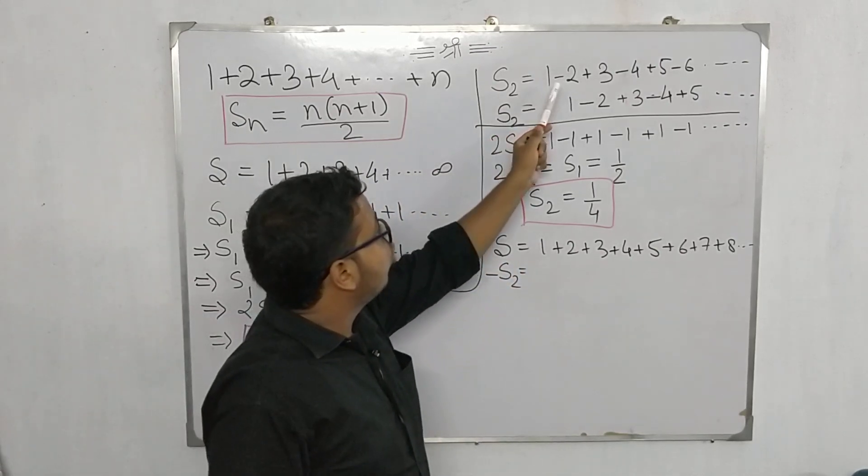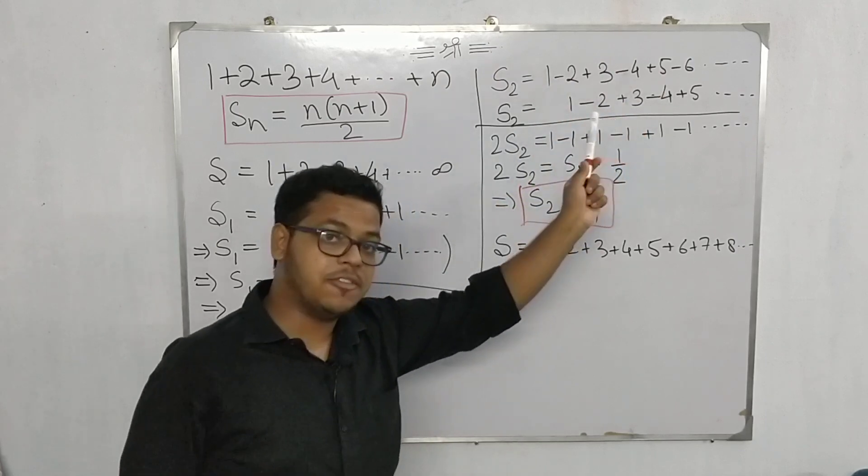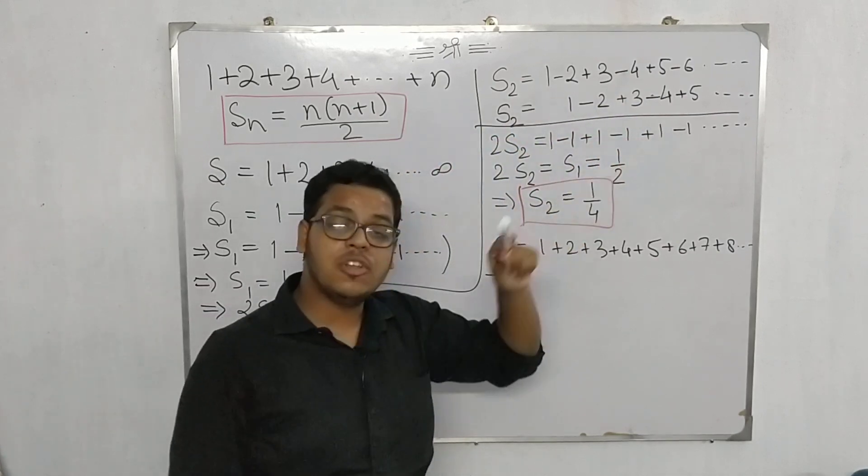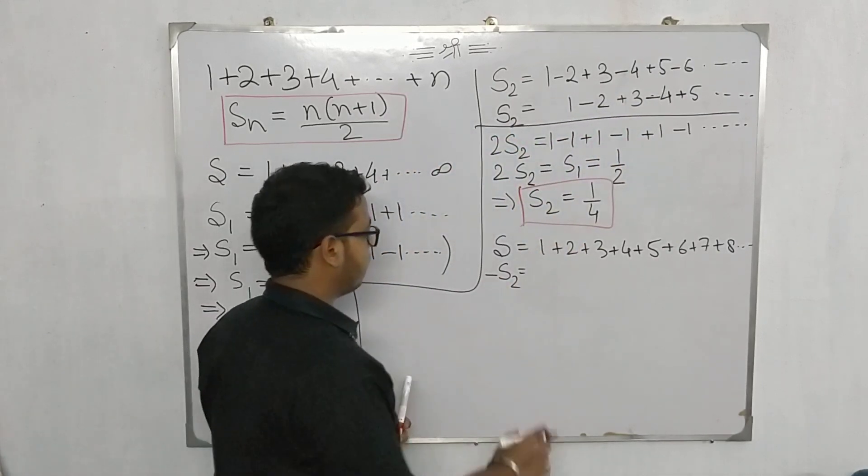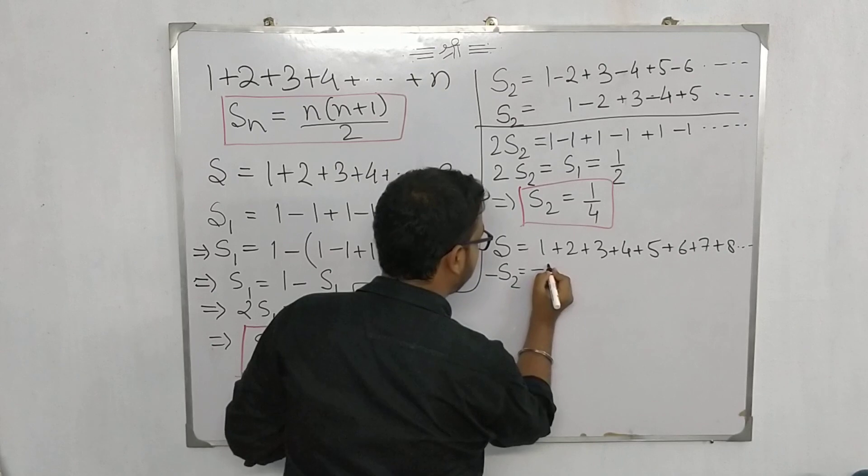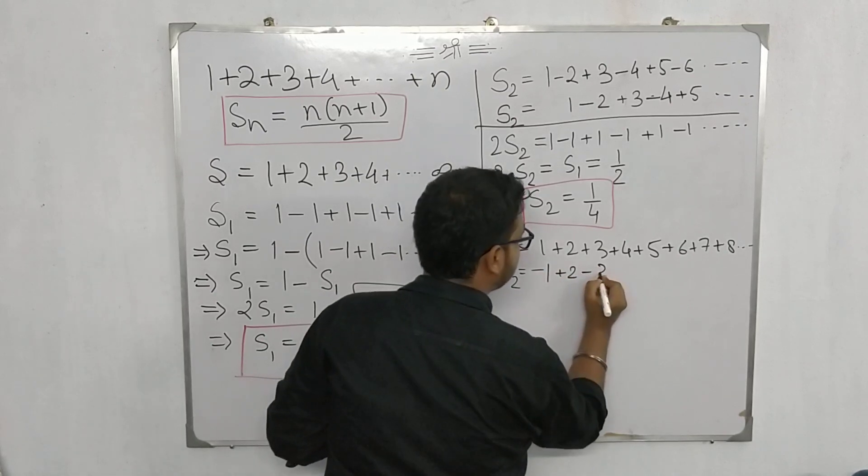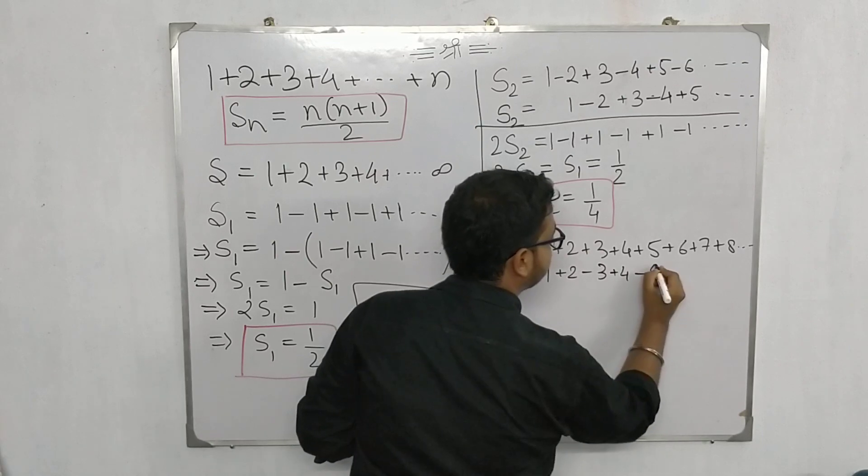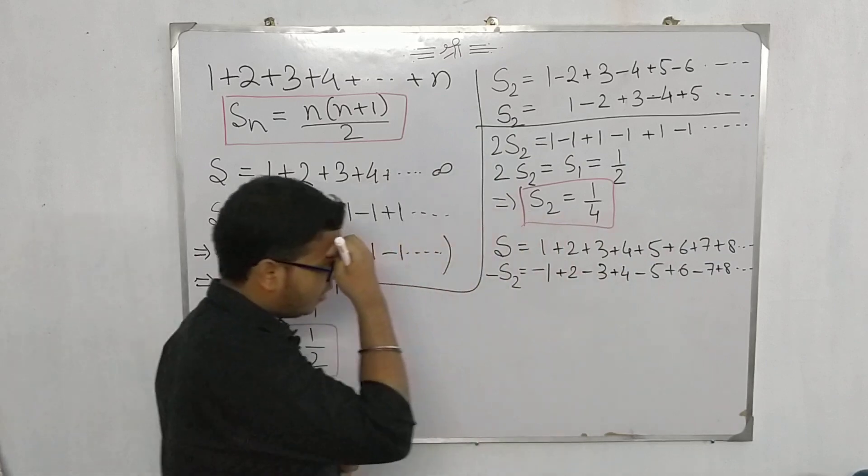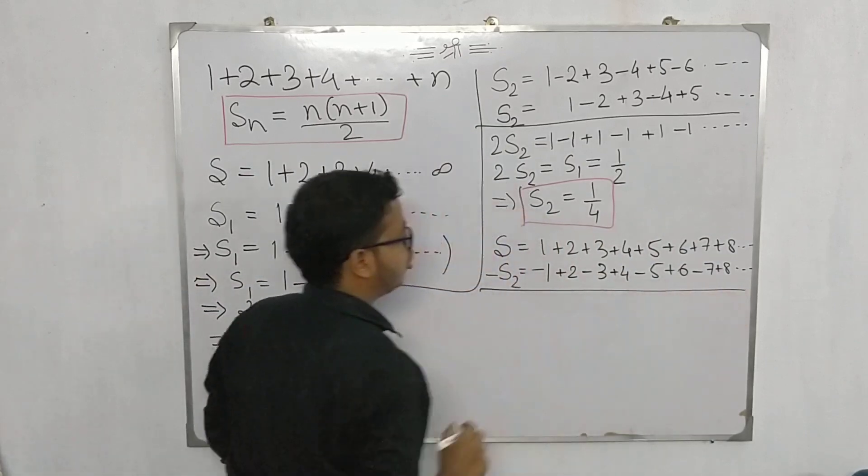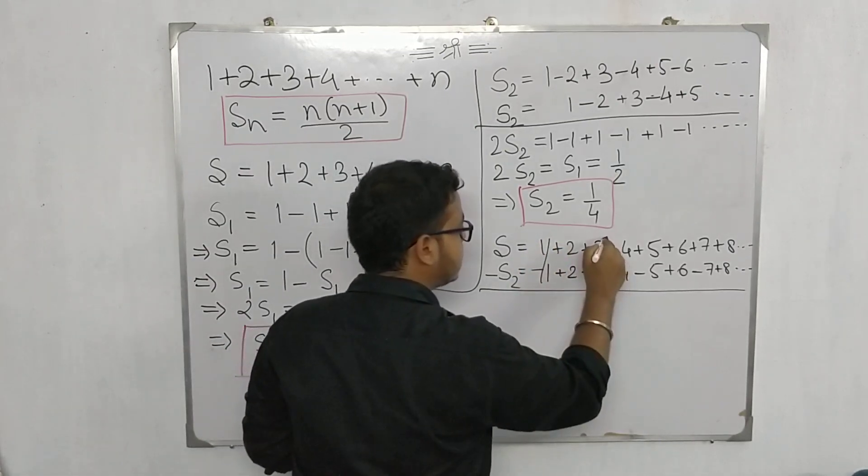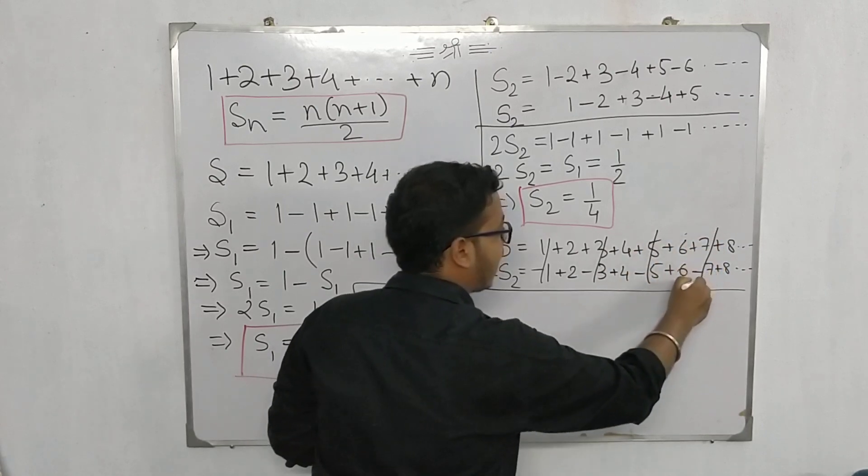Now I am subtracting series s₂ from series s. If you subtract series s₂, all the odd terms which are actually positive will become negative and all the even terms that is the negative terms will become positive, because we are multiplying it with -1. So this will be -1, then +2, then -3, +4, -5, +6, -7, +8 up to infinity.